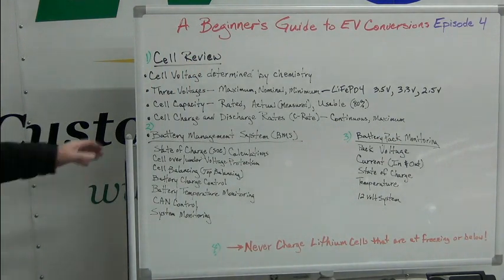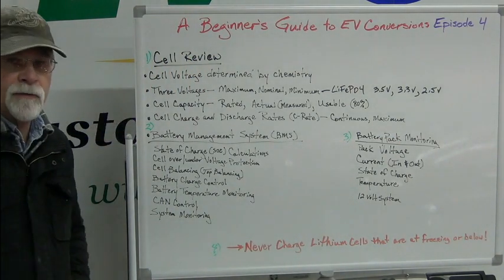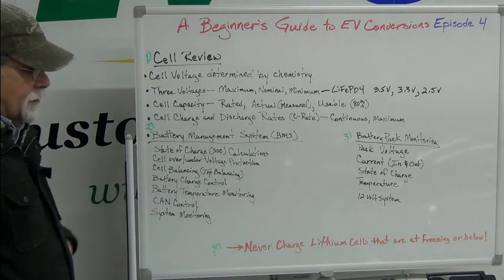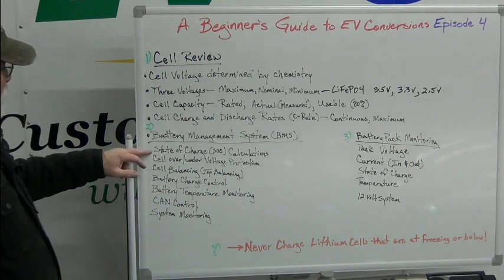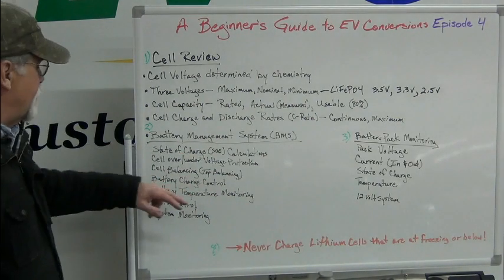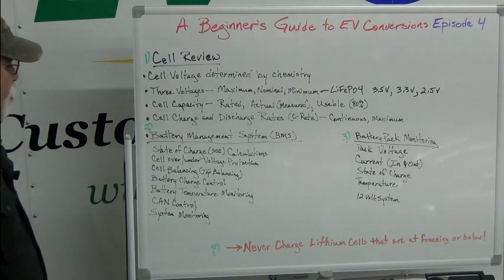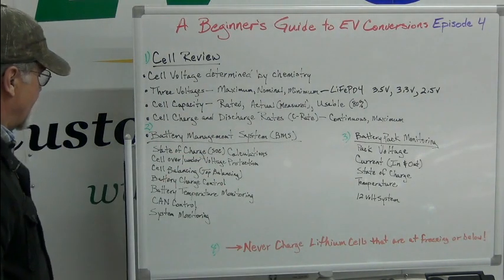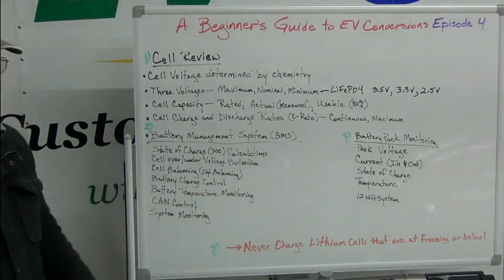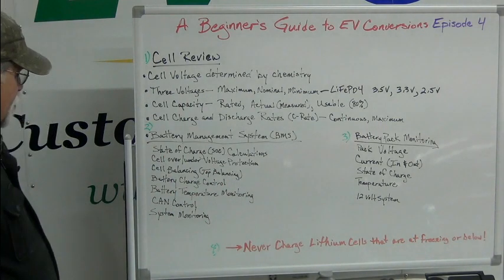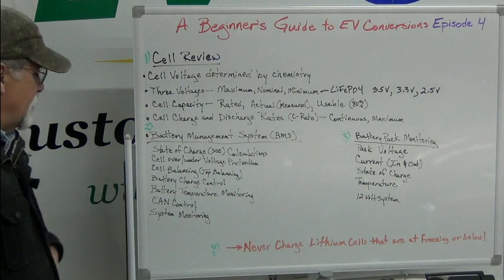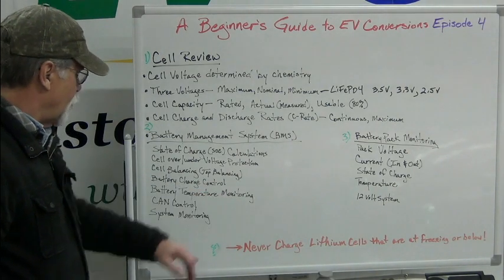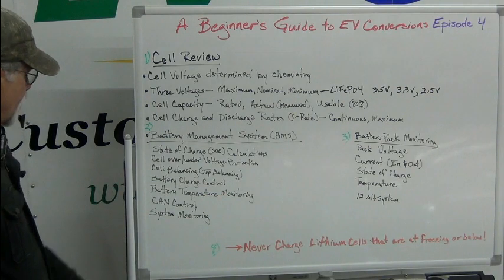Next, let's mention battery management systems, more commonly referred to as a BMS. What does a BMS do? They perform several functions: state of charge calculations (SOC), cell over and under voltage protection, cell balancing — using a top balancing method — battery charge control (turning the charger on and off), battery temperature monitoring at a cell level, module level, or battery pack level, and system monitoring.